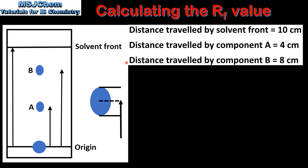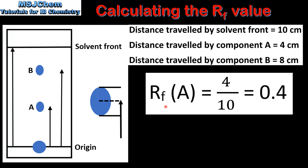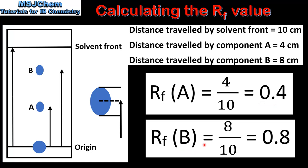Next we'll use this data to calculate the retention factor values. Starting with component A, we have the distance travelled by the component, which is 4 cm, divided by the distance travelled by the solvent front, which is 10 cm — giving a retention factor value of 0.4. For component B, we have 8 cm divided by 10 cm, which gives a retention factor of 0.8.